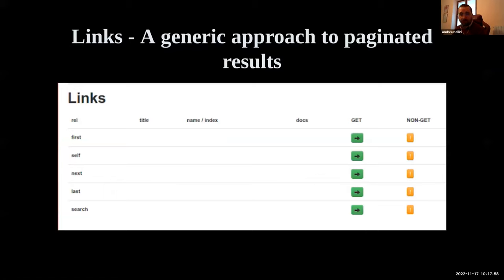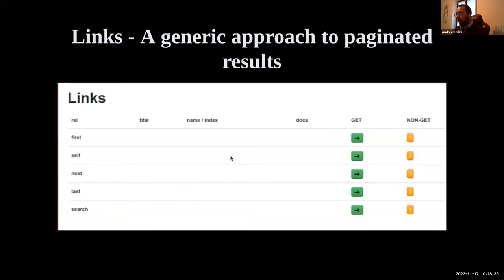In the HAL browser document, all the pagination links are included in the link section. For any paginated collection, you will have links to the first page, current page, next page, and last page in the pagination series. You'll also have access to a list of endpoints that allow you to perform searches and filtering over the REST collection.